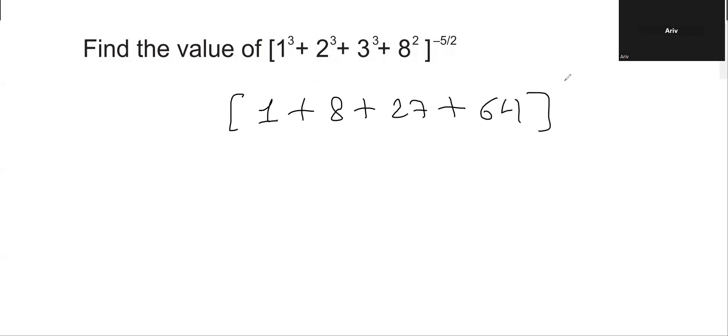The whole expression is raised to the power -5/2. Now if we add the terms: 64 + 8 is 72, 72 plus 27... adding all of this gives us 100. So this is 100 raised to the power -5/2.